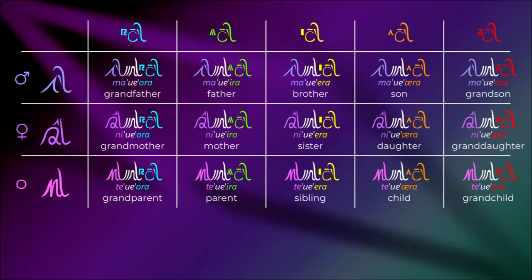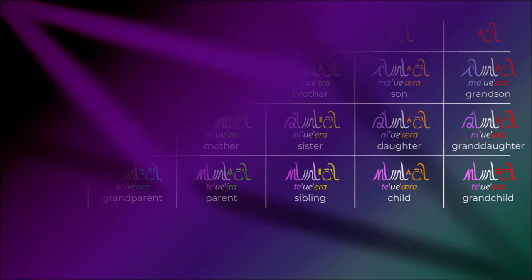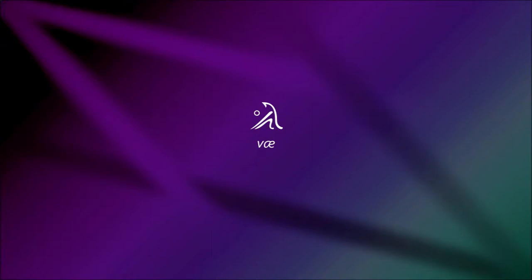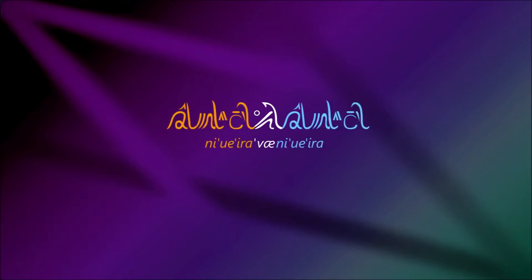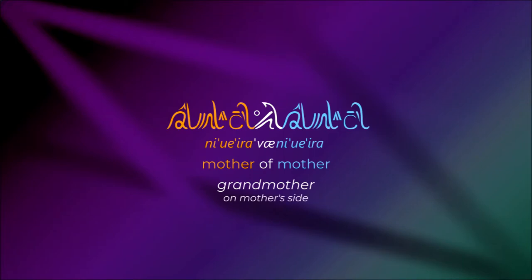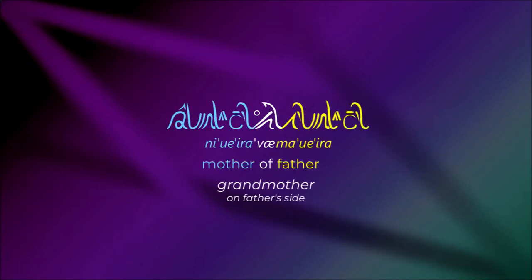We can use the referent marker fai, discussed in video 13, to describe family members with more precision. For example, ni-ue-ira fai ni-ue-ira — literally 'mother of mother' — is also your grandmother, but specifically your grandmother on your mother's side. In analogy, ma-ue-ora fai ni-ue-ira is your grandfather on your mother's side. Ni-ue-ora fai ma-ue-ira is your grandmother on your father's side, and so on.